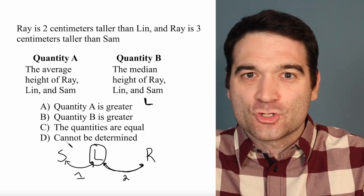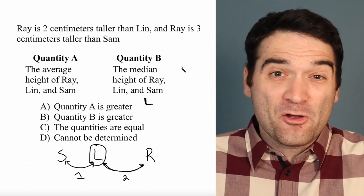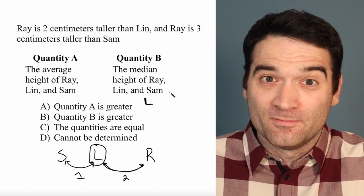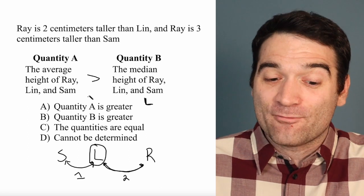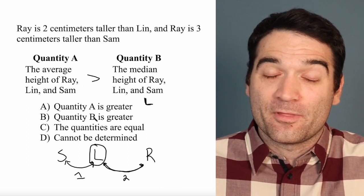So Ray is going to be pulling the average up away from Lin. I don't know how far up, but I don't need to know. All I know is that the average of the heights is going to be greater than the median of the heights.